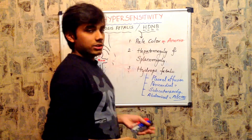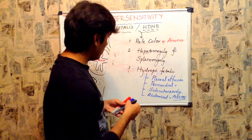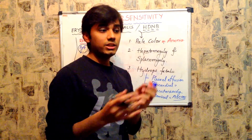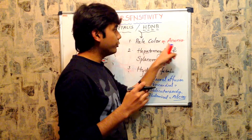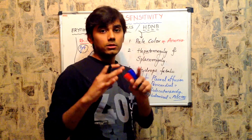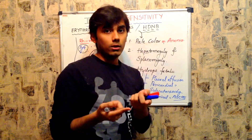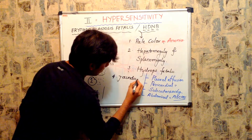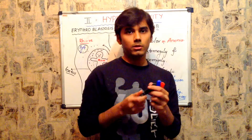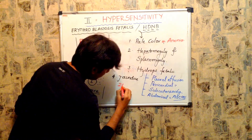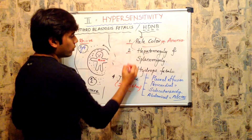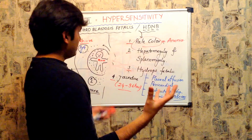The fourth symptom: after the baby's birth, within 24 to 36 hours, the baby's skin color — initially pale due to anemia — turns yellow. The sclera of the eyes also turns yellow due to bilirubin release into the bloodstream — that is jaundice. It is important to remember that this jaundice occurs 24 to 36 hours after birth. These four symptoms — pale skin, hepatosplenomegaly, hydrops fetalis, and jaundice — are the major signs of erythroblastosis fetalis.